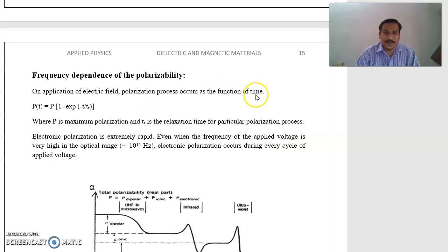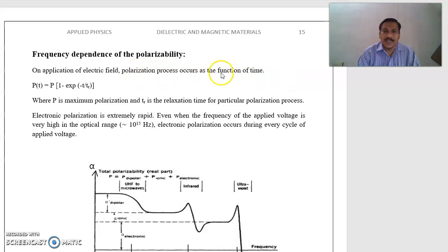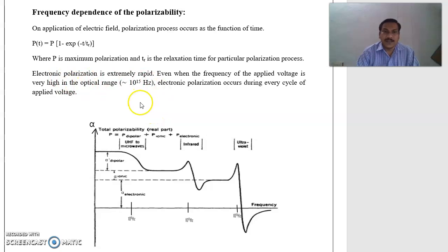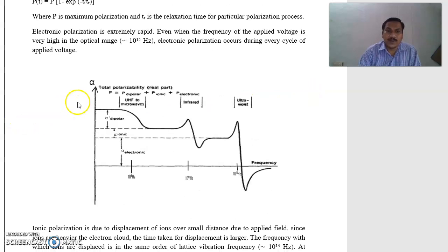Next, frequency dependence of polarization. On application of an electric field, the polarization process occurs as a function of time: P(t) = P·(1 − exp(−t/τr)), where τr is the relaxation time and t is the particular time. Electronic polarization is extremely rapid. Even when the frequency of the applied voltage is very high, in the optical range — nearly 10¹⁵ Hz — electronic polarization occurs during every cycle of the applied voltage, up to 10¹⁵ Hz.